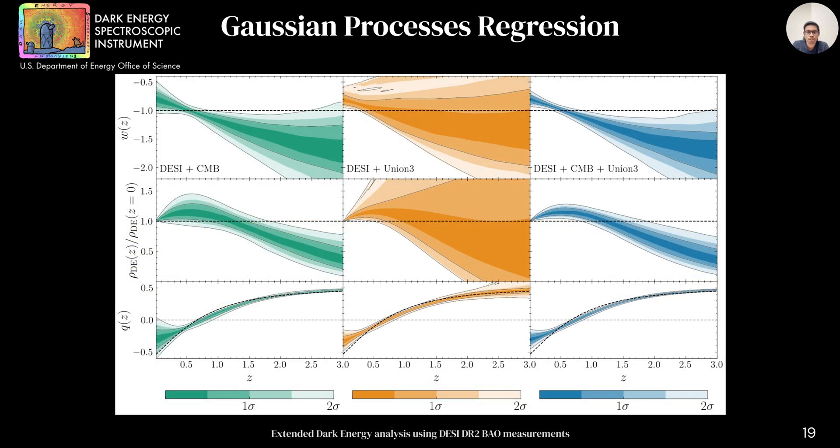Here we show how constraints change when different combinations of data sets are considered with DAISI plus CMB in green, DAISI plus Union 3 in orange, and all three data sets combined. The top row shows equation of state, the middle row shows the normalized dark energy density, and the bottom row shows the deceleration parameter. You can see the evidence for the slowing down of the acceleration in all three data set combinations.